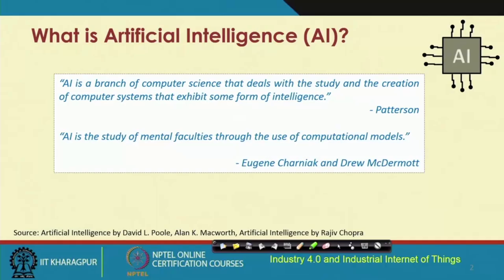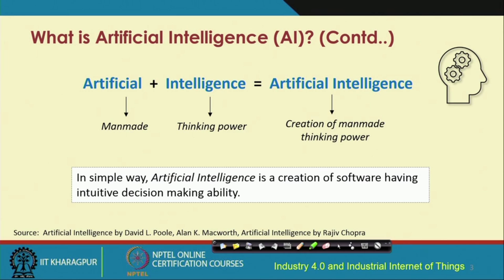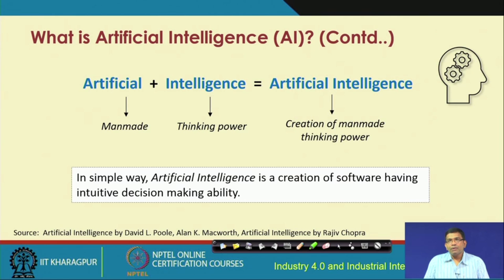Another viewpoint — and there are many different viewpoints of what AI is — is how we can use different computational models to improve the mental faculties of humans. That is another scope of AI. This latter definition is proposed by Eugene Charniak and Drew McDermott. So we are talking about 'artificial', which is manmade, integrated with 'intelligence', which is the thinking power, and together achieving the development of an AI-based system — a creation of manmade thinking power.